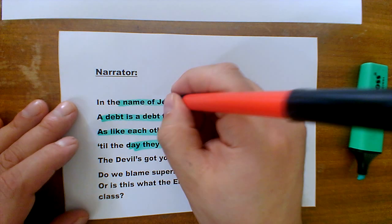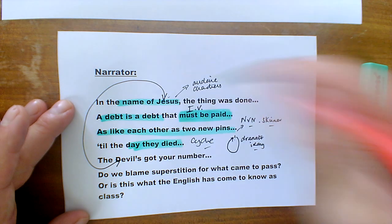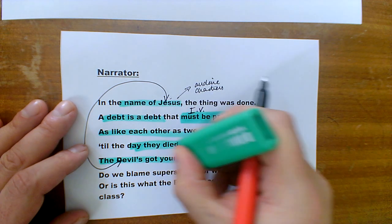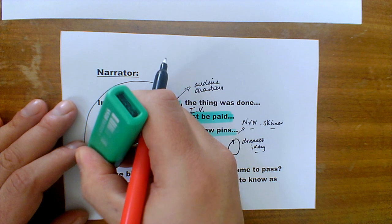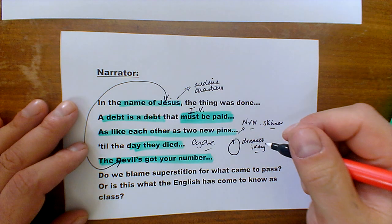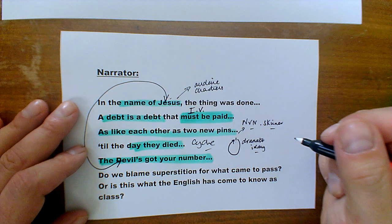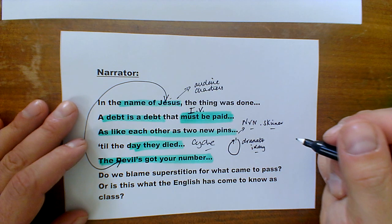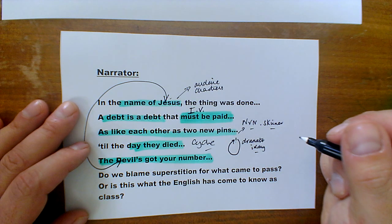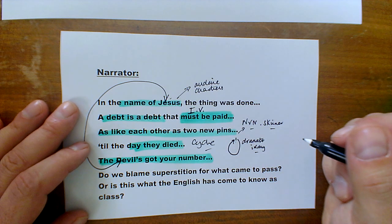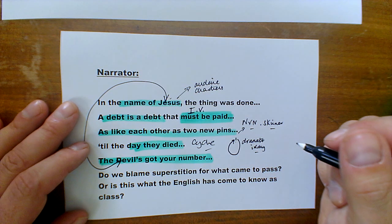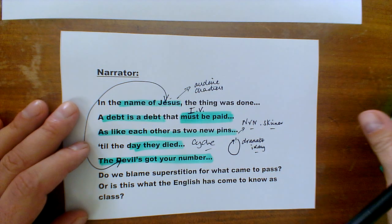As a counterpoint to the Jesus reference, the narrator constantly says — specifically to Mrs. Lyons and Mrs. Johnston — 'the devil's got your number. You know he's going to find you. He's knocking at your door.' This is a constant sense of foreboding and threat that they must pay for their actions and that consequences will come to bear on what they have done.